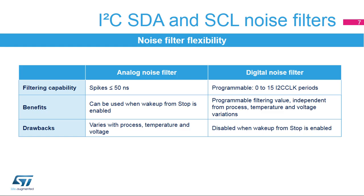The STM32L4 embeds noise filters on I2C data and clock lines. The analog noise filters can filter spikes up to 50 ns and can be enabled or disabled by software. By default, analog noise filters are enabled. The digital noise filters can be enabled on the SDA and SCL lines instead of the analog noise filters, suppressing spikes with a programmable length from 1 to 15 I2C clock periods, offering extra filtering capability compared to the 50 ns required by the I2C standard. The digital filter value is fixed by software, while the analog filter value may vary with process, temperature, and voltage. Note that the digital filter is disabled by hardware when the wake-up from stop feature is enabled; in this case, only the analog filter can be enabled.